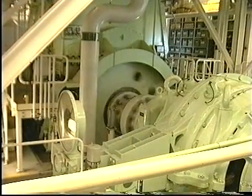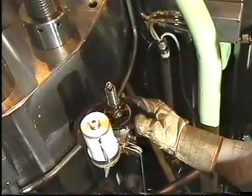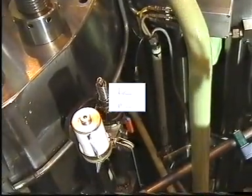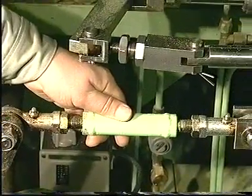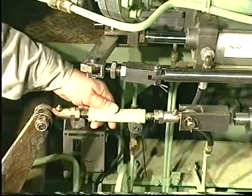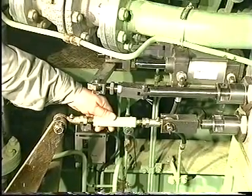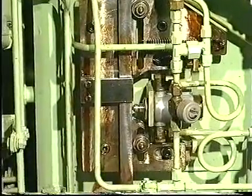Start the engine and run it up to a load corresponding to the brake point load. Use the indicator drive or PMI system to adjust the load until it corresponds to the brake point load. The mean indicated pressures of the individual cylinders must not deviate more than 0.5 bar. If the deviation is more than 0.5 bar, adjust the load distribution on the fuel index rack of the individual cylinders. The engine is now running at the brake point.